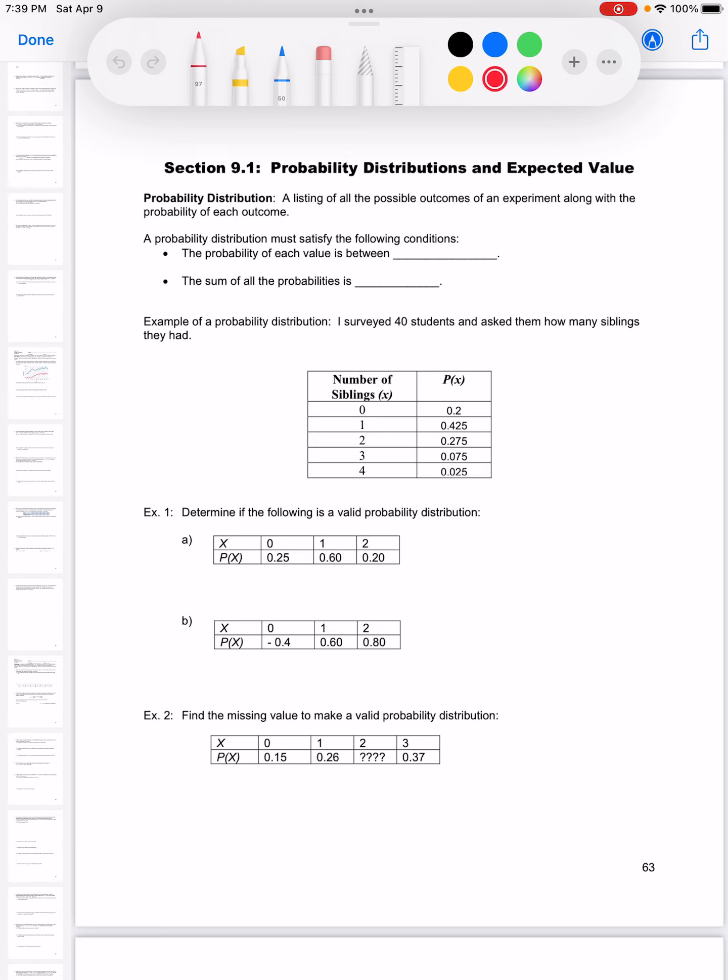So probability has to be a value between 0 and 1. You can't have an answer like 2.5, and you also can't have a negative answer.